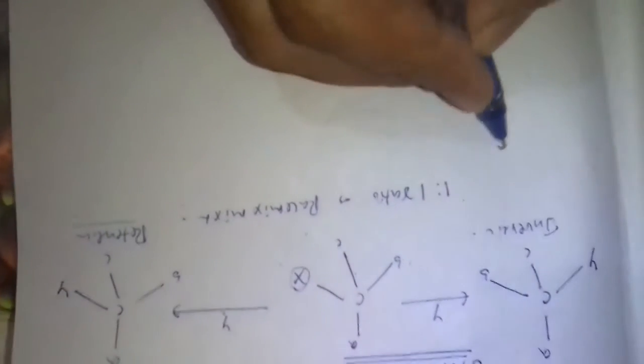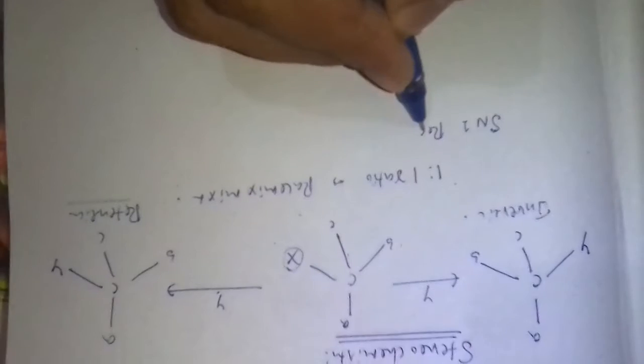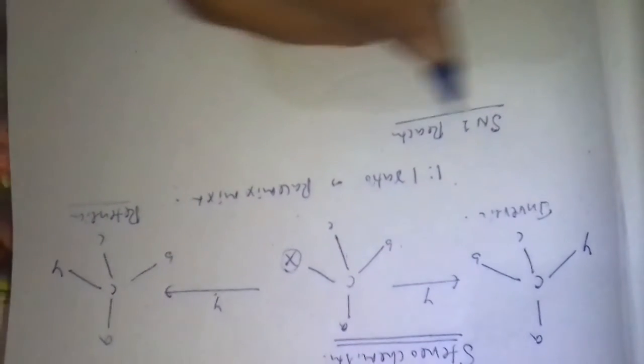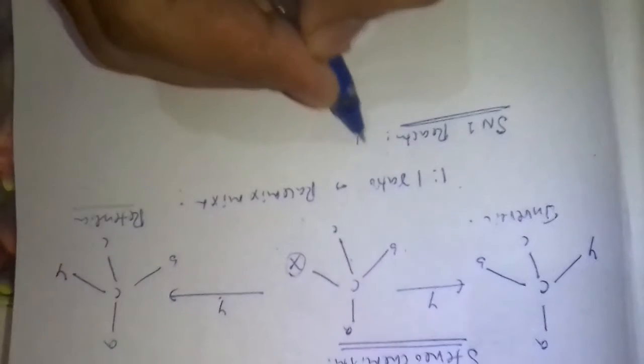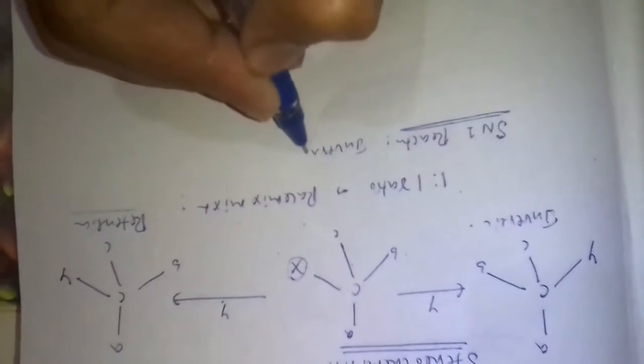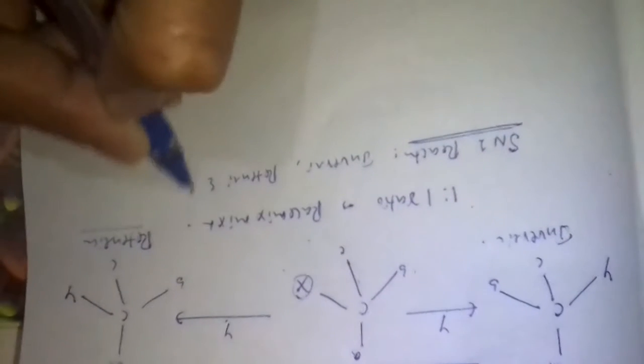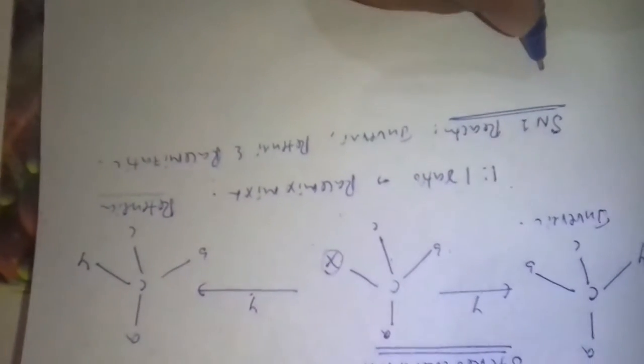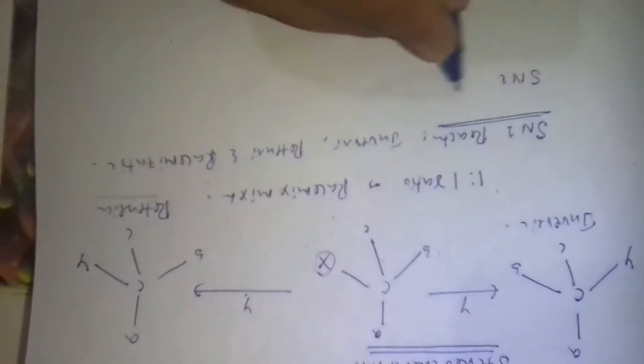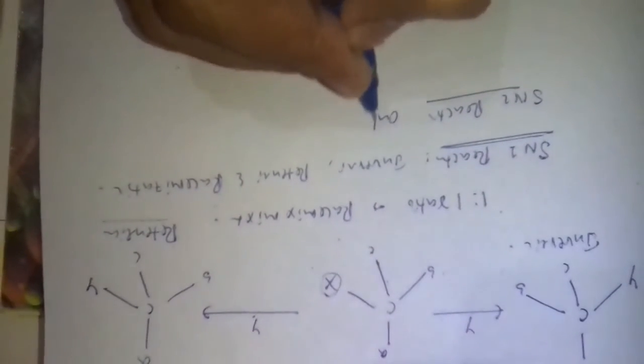In case of SN1 reaction, if the reaction takes SN1 mechanism, then inversion, retention and racemization takes place. In case of SN2 reaction, only inversion takes place.